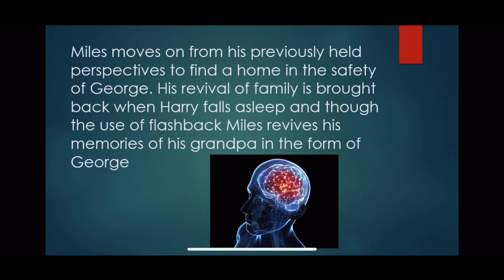Although Miles and Harry have been brought upon the same knowledge about George, Harry is the one to go out of his way to seek care. In a progression introducing Miles to George, he is quickly reassured in an effort to change his emotion from fear and embarrassment to comfort and security, especially as George goes out of his way to take care of Miles' cut to his head, and also when Miles finally feels at home, laying in front of the fire in the bed that George had laid out for him. By taking a step forward into accepting an outcast, Miles moves on from his previously held perspectives to find a home in the safety of George.